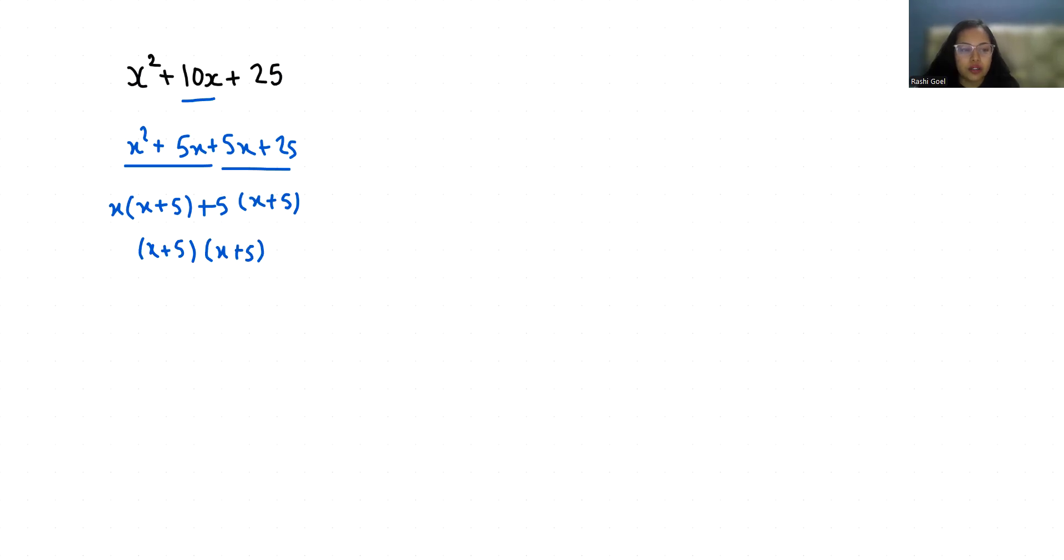Now to find the solution, we set this equal to 0. So x + 5 = 0, which gives x = -5 in both cases.